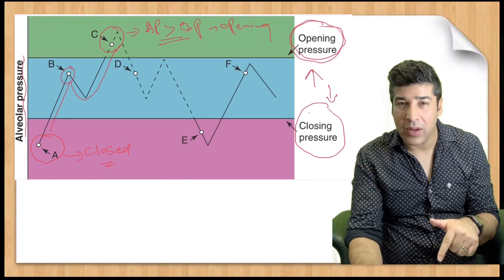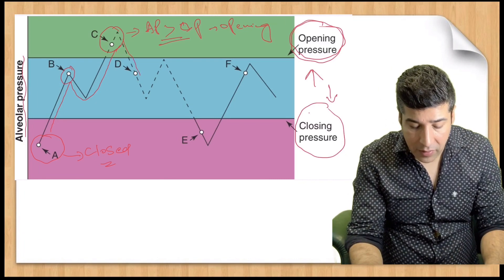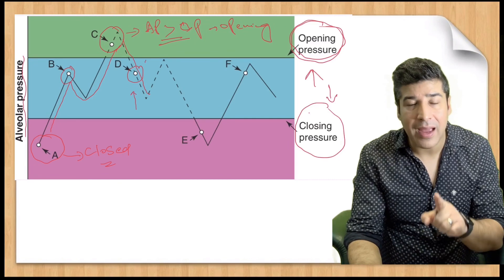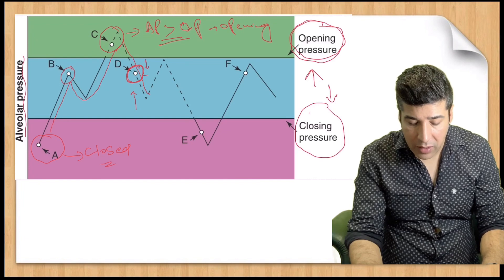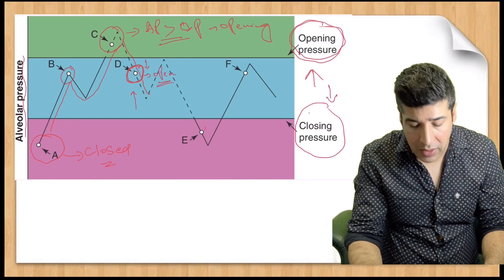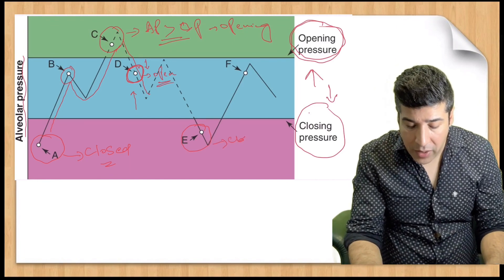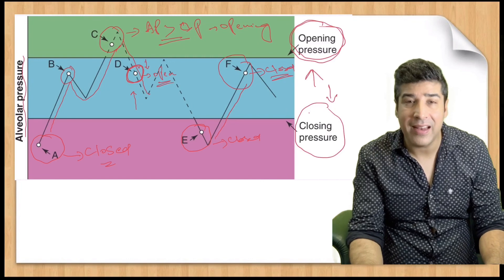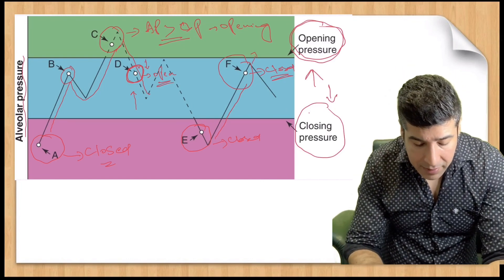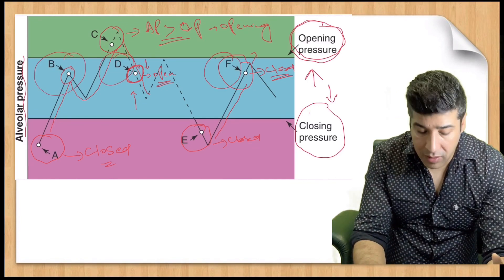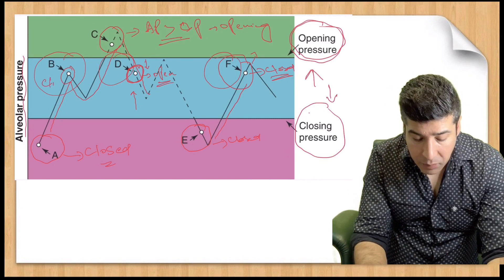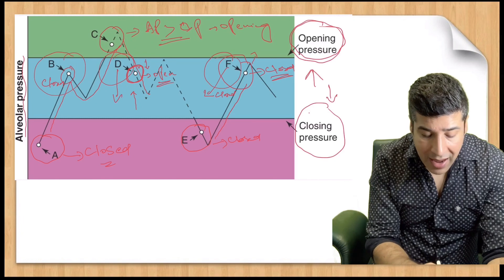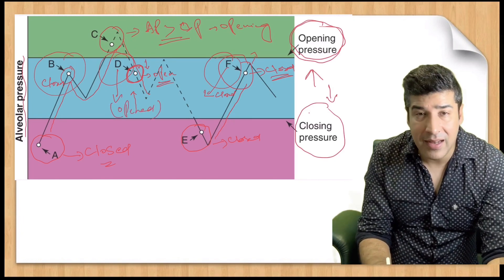Once pressure falls below the opening pressure but remains above the closing pressure, the alveolus remains open. If pressure falls below the closing pressure — point E — the alveolus collapses again. At point F, the alveolus is closed again. Notably, at points B and F the alveolus is closed, but at point D — the same pressure — the alveolus is open.